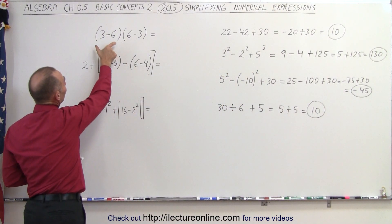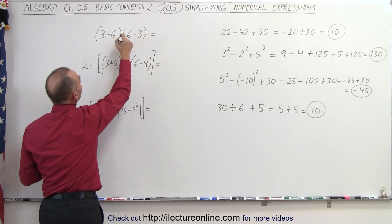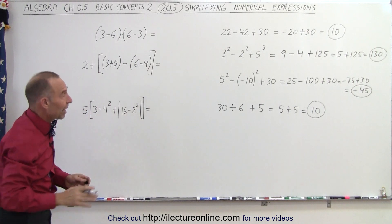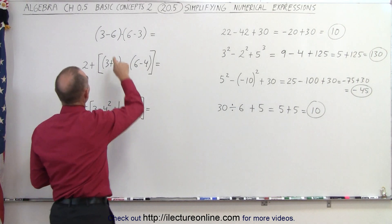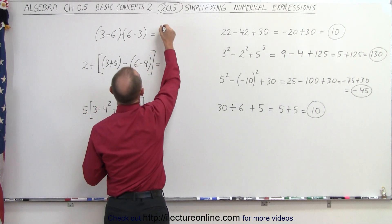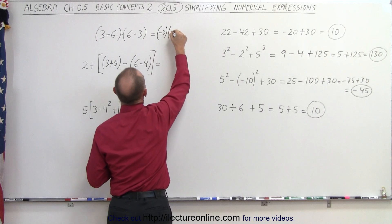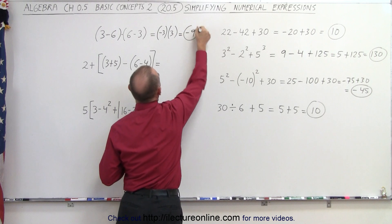The next one, notice we have two things in parentheses, and they're multiplied together. Even though there's nothing in between, it's implied that this is a multiplication. But we must do what's in the parentheses first. So we have 3 minus 6, which is minus 3, multiplied times 6 minus 3, which is plus 3. And minus 3 times plus 3 is equal to negative 9.